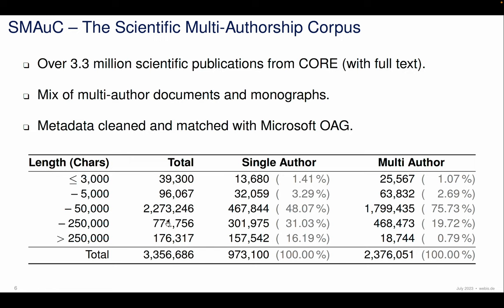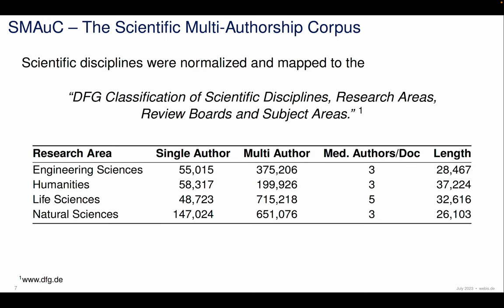The text length varies between less than 3,000 and more than 250,000 characters, but most are in the middle range of 5,000 to 50,000 characters. One thing that is always very important when creating a new authorship dataset is to control for topic, since that is the easiest thing to classify. We did that by matching the scientific disciplines from the Open Academic Graph with the DFG classification of scientific disciplines, research areas, review boards, and subject areas. This classification schema has four top-level research areas: engineering sciences, humanities, life sciences, and natural sciences.